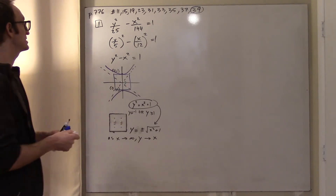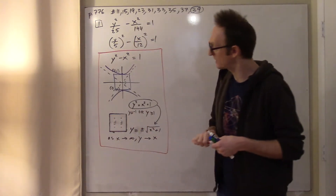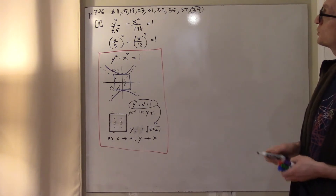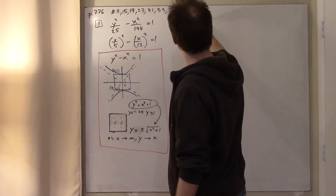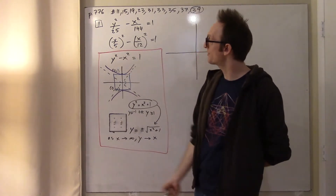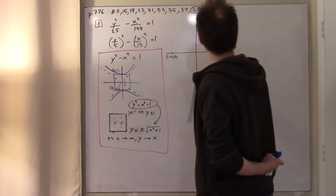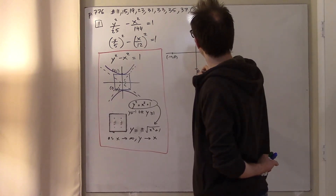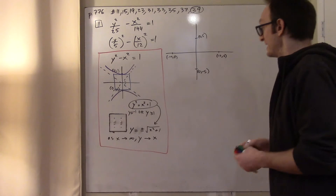That was all prerequisite knowledge you could remind yourself of in a few moments. When it comes to doing problems like this with confidence, it should be easy. This is just like the unit hyperbola, but the y-coordinate has been stretched by a factor of 5 and the x-coordinate by a factor of 12. So we have points at negative 12, 0 and 12, 0 on the x-axis, and 0, 5 and 0, negative 5 on the y-axis. These vertices determine the happy box.